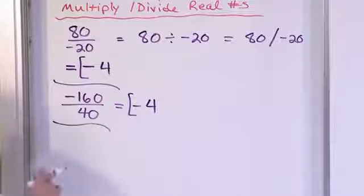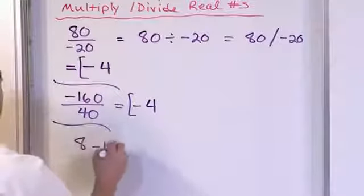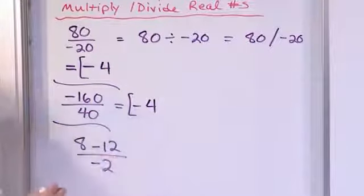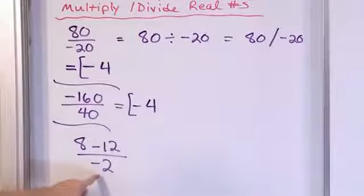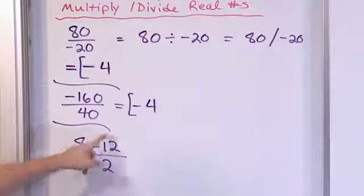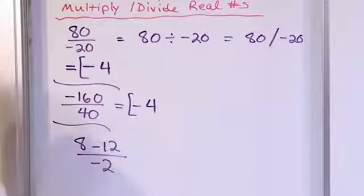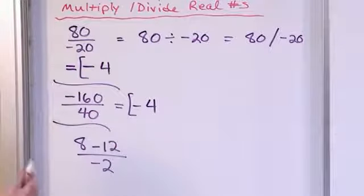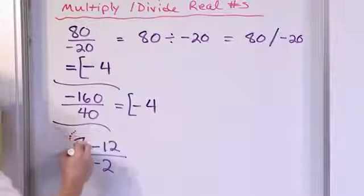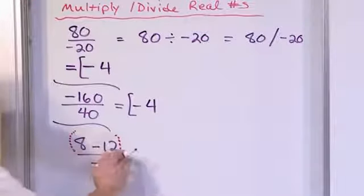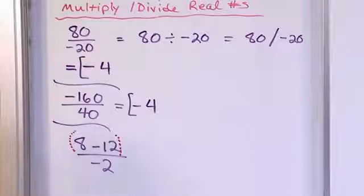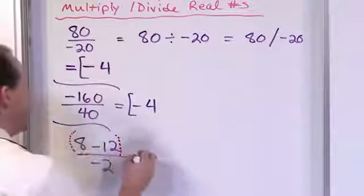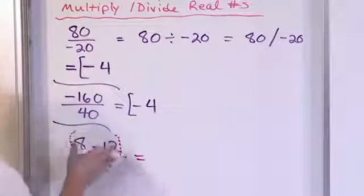Now let's take a look at: 8 minus 12 over negative 2. This kind of problem confuses a lot of students — they don't know whether to divide 8 by 2, or 12 by 2, or do the subtraction first. This comes down to order of operations. When you see something added or subtracted on the top or bottom of a fraction, you pretend there are parentheses around it, meaning it's grouped together and you have to do it first.